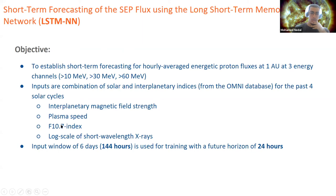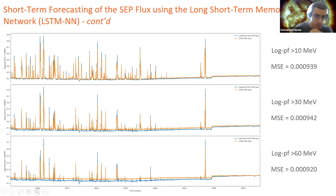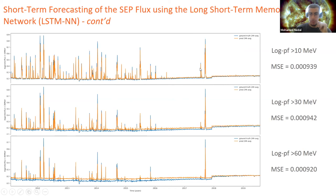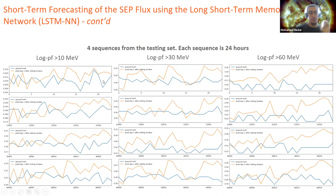For the deep learning part, I'm developing a long short-term memory neural network to forecast the flux of SEPs at three different energy channels, using a combination of interplanetary indices and solar indices as input parameters. The input window is currently six days and the forecast horizon is 24 hours. Here are preliminary results for three energy channels from 2012 to 2019. We can see a very close result between the actual data on the black curve and the prediction from the model with the orange curve. Each sequence represents 24 hours to show the correlation.